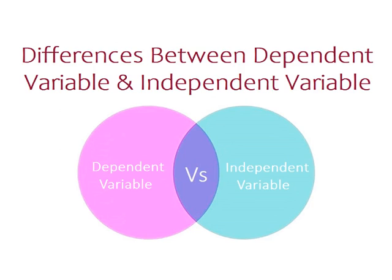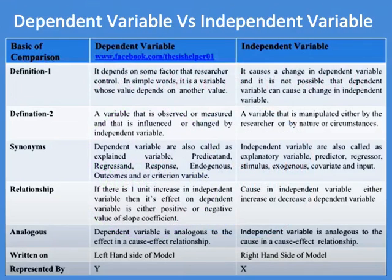Differences between Dependent Variable and Independent Variable. Definition 1 of Dependent Variable is that it depends on some factors that the researcher controls. In simple words, it is a variable whose value depends on another value. Definition 1 of Independent Variable is that it causes a change in Dependent Variable, and it is not possible that Dependent Variable can cause a change in Independent Variable.